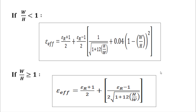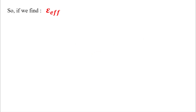So we have two cases: the first if w/h is less than one, and the second if w/h is greater than or equal to one. Knowing the height of the substrate and the width of the feed line, we can determine which relation to use and find epsilon effective. Once we have epsilon effective and the free-space wavelength, we can find lambda g.